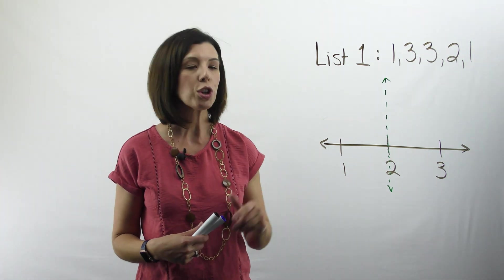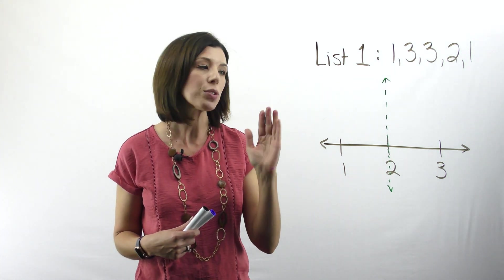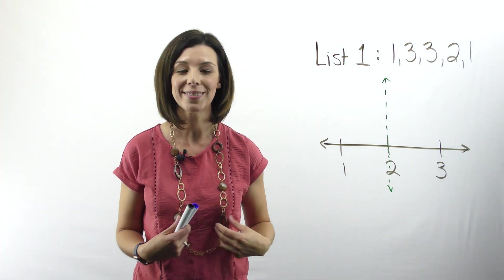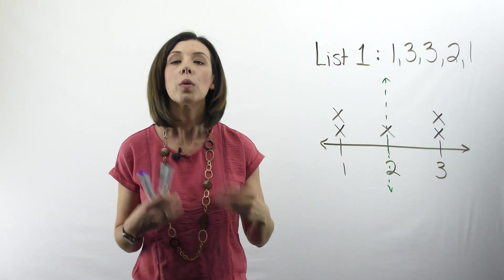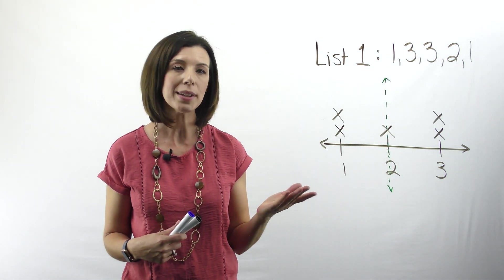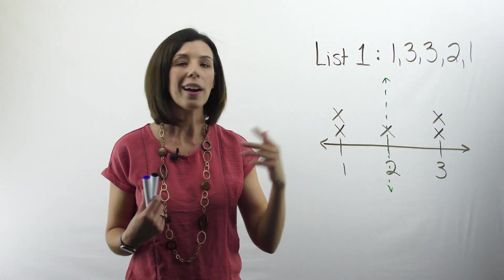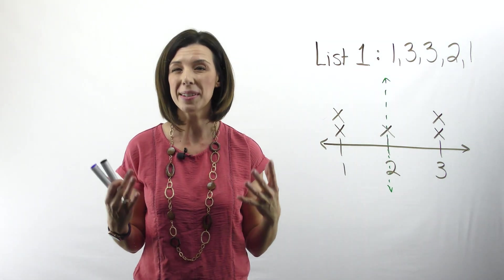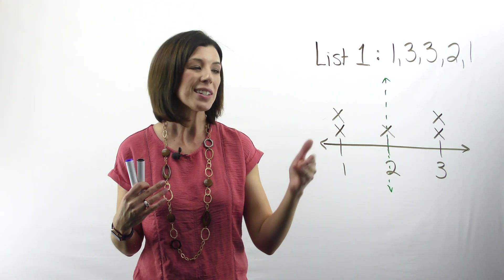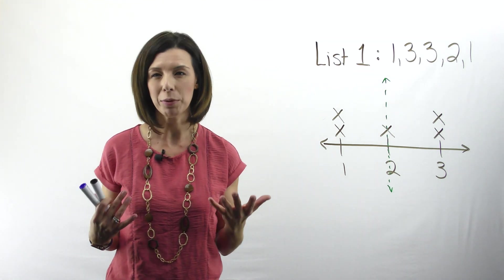Next, I want to make sure and put little x's for each of my data points. Remember, one thing we talked about before when we do dot plots is we want to make sure that our x's or our dots are about the same size, just so it doesn't look like I have more of a number than I really do.